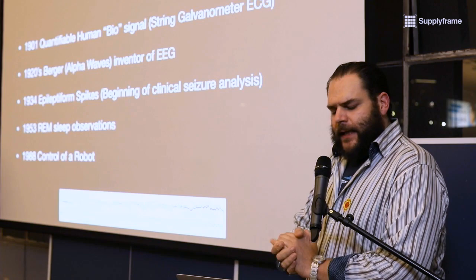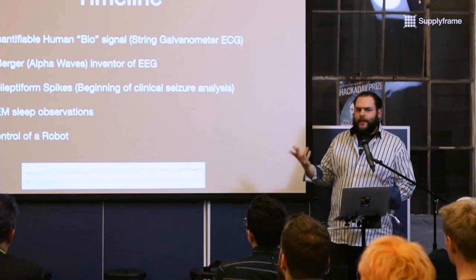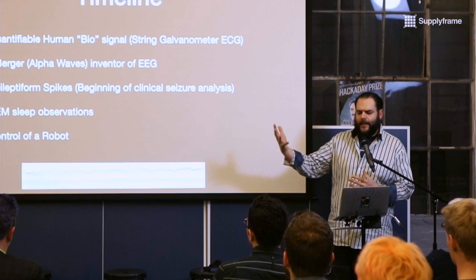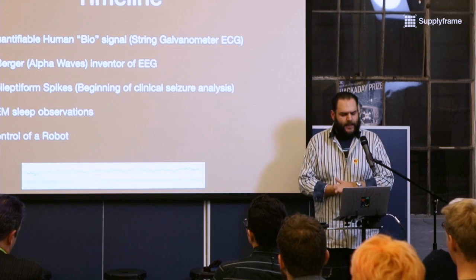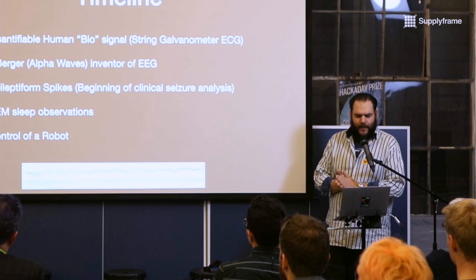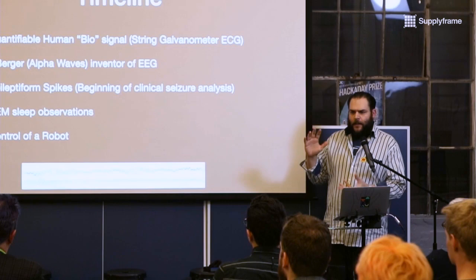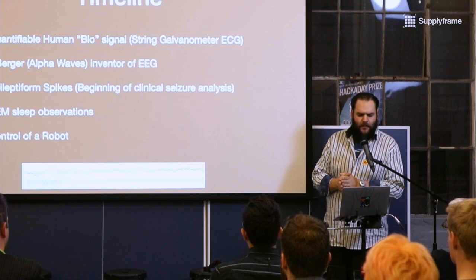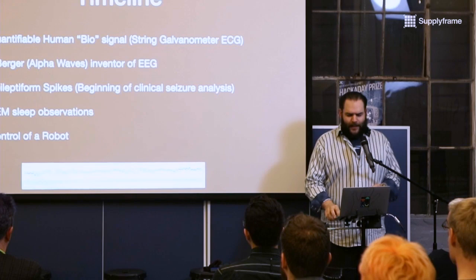Going forward from that in 1934, epileptiform spikes in 1936 is what really started bringing EEG to the attention in more of a clinical setting. They were able to determine that they could correlate certain brain activities with seizures. That kicked off EEG as a clinical science and future diagnostic tool. In 1953, it was used in sleep studies, in particular identifying REM. And in 1988, the first BCI or brain control interface was documented in actually using brainwave activity to believe it was referred to as a gadget of mass, but some kind of robot was moved around by things going on in the brain.